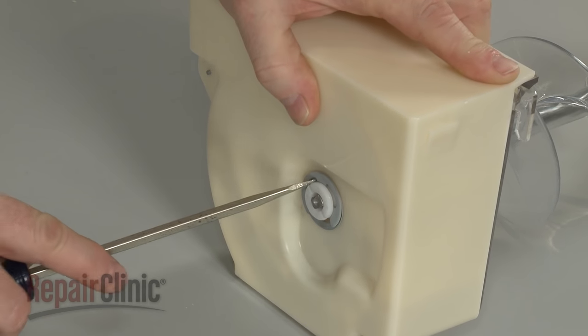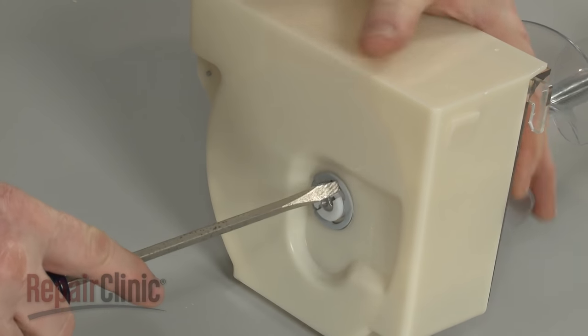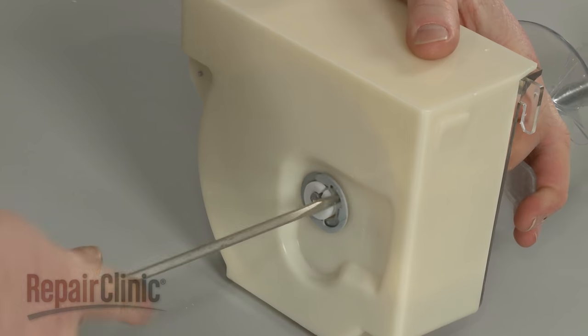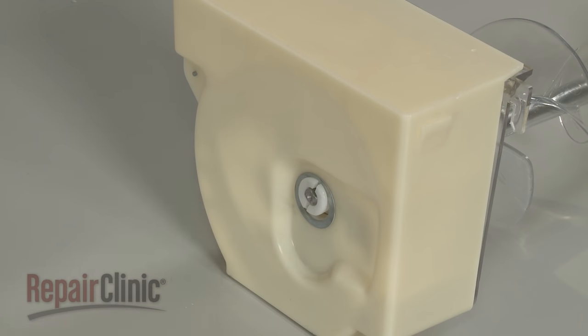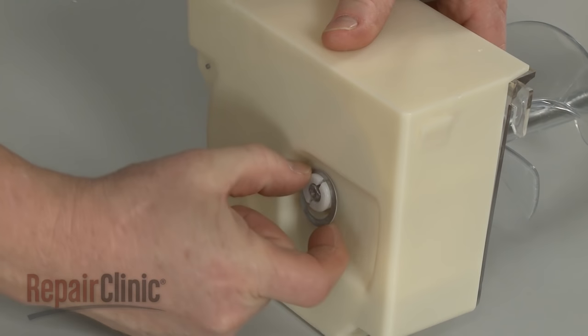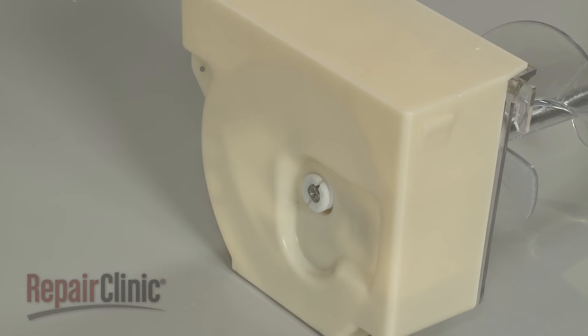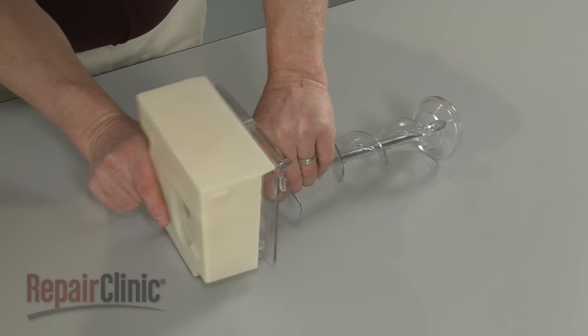Now detach the E-clip and remove the washer. You can now lift off the housing.